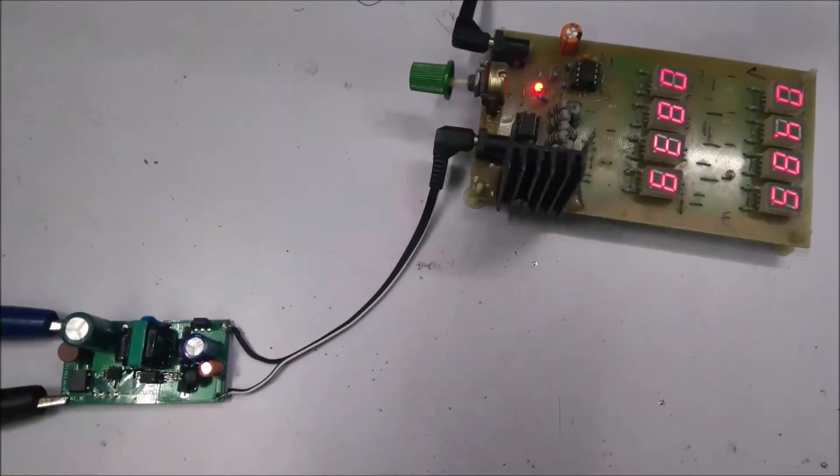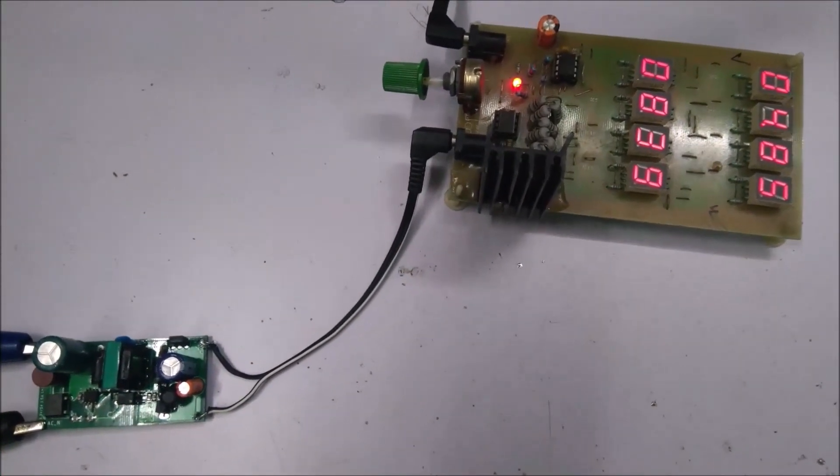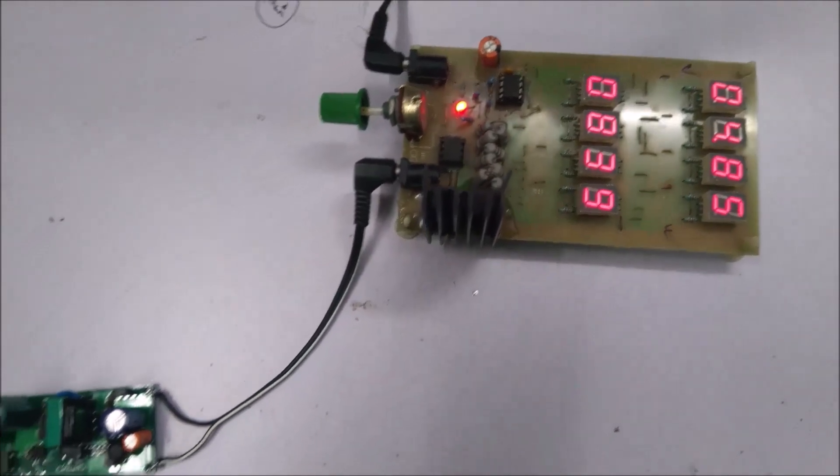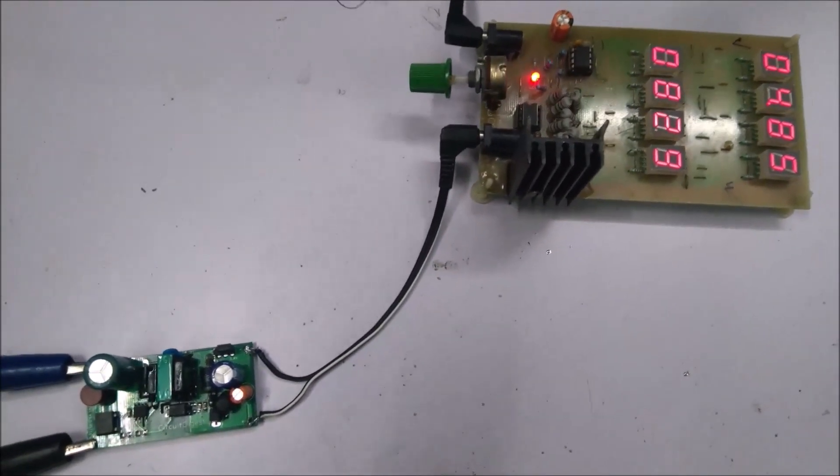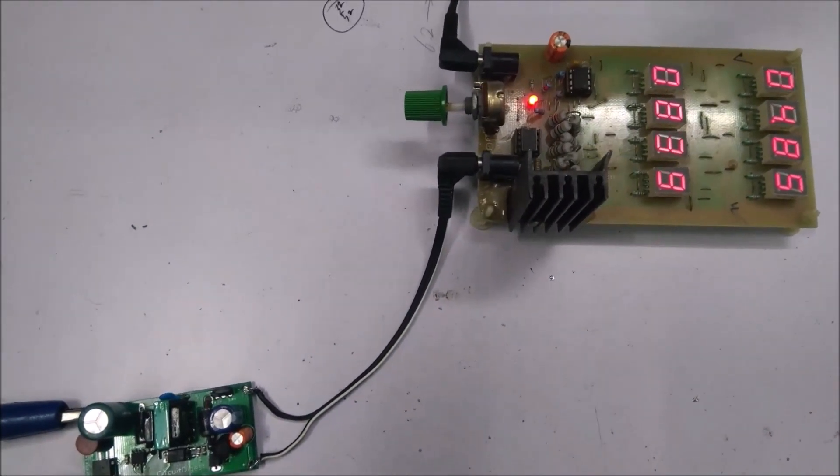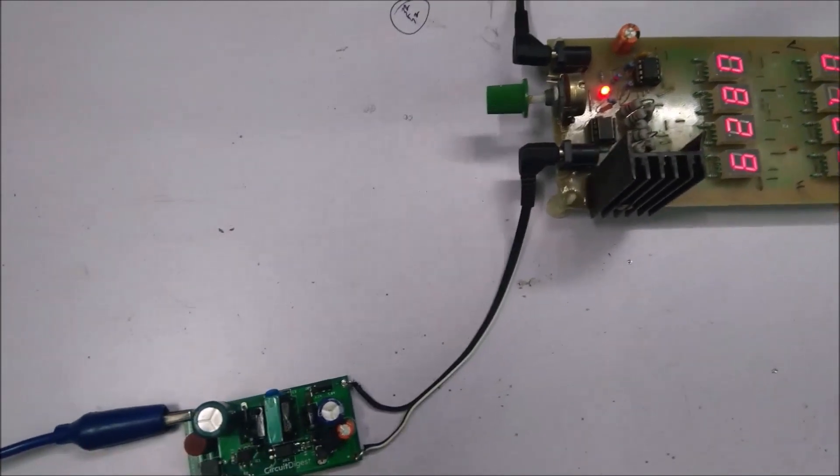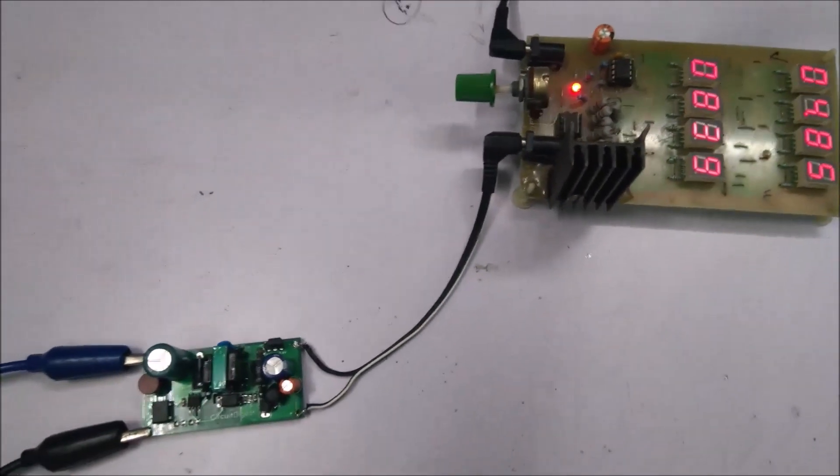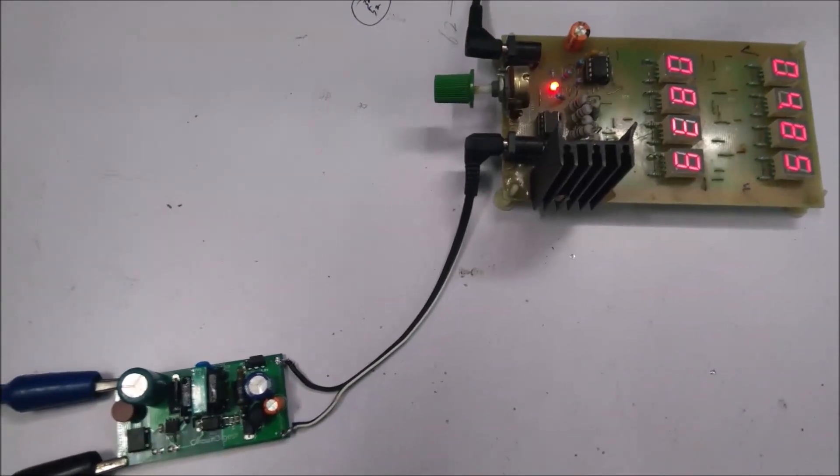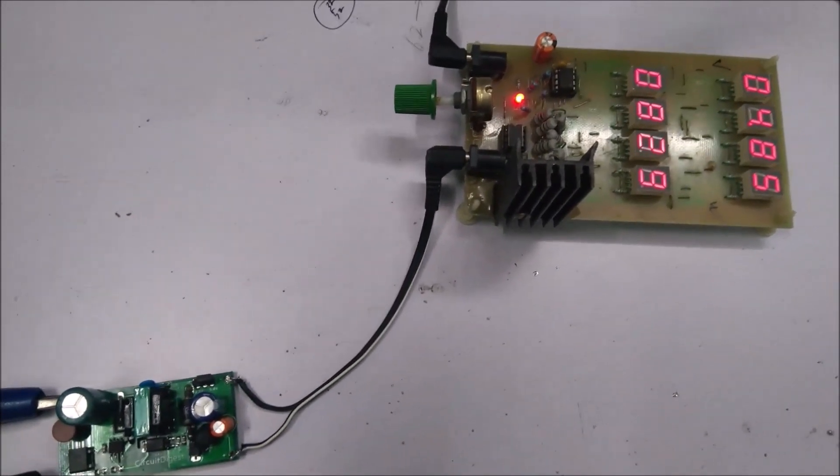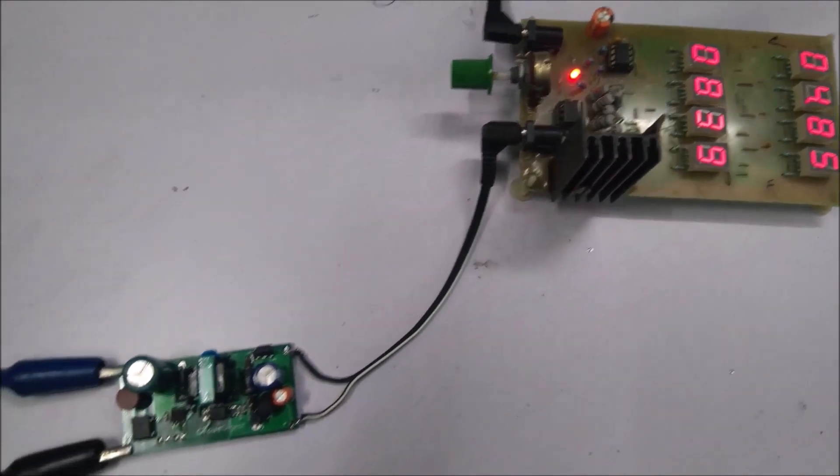Once I received the PCB I assembled all the components and created this test setup where the output of our SMPS is connected to an electronic adjustable DC load setup. Currently the output is 5 volt with the maximum current of 850 milliamps because our transformer is a handmade transformer. On the input side I have connected our SMPS to a Variac to adjust the input AC voltage. Currently it is at 230 volts.